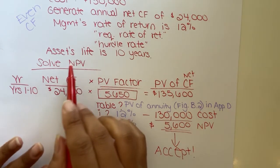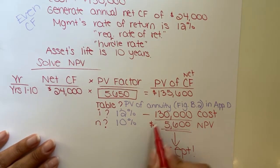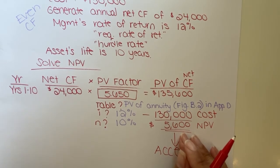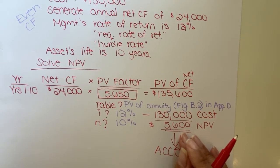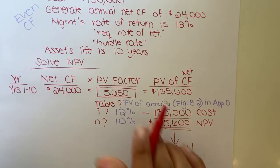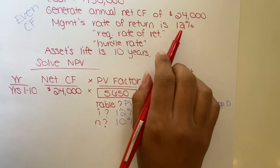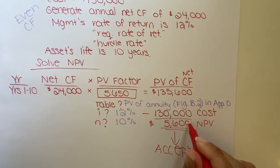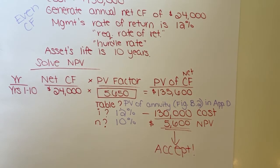So, solve for NPV — this is our NPV. You could stop there. If the problem then says what do you recommend, should management buy this asset, we would say yes because it's a positive NPV, meaning that management's rate of return of 12% has been exceeded. If it was exactly a 12% return, this would be zero. So it's well exceeded it.